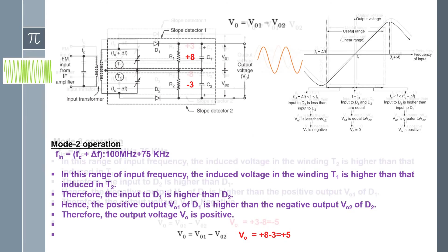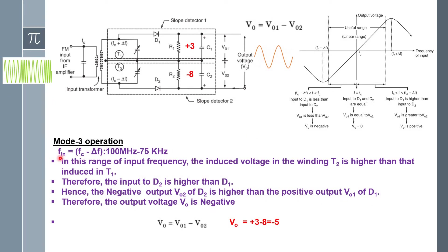In the third mode of operation, the input frequency is fc minus Δf. This occurs during the negative cycle of the message signal at the transmitter side. Considering 100 MHz minus 75 kHz, this particular frequency fc minus Δf is applied towards the primary of the transformer. In the secondary, the two tuned circuits are available, and the lower tuned circuit is exactly tuned to this input frequency, giving maximum response compared with the upper tuned circuit.